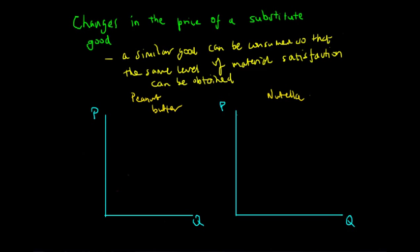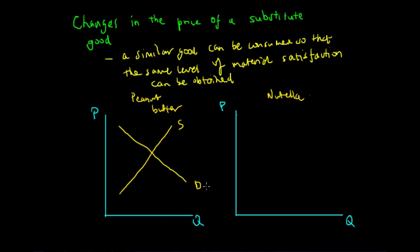Let's look at how this would actually affect supply and demand analysis. We have a supply and demand curve for peanut butter, assuming a relatively elastic, upward sloping supply curve because it has a lot of substitutes, and an elastic demand curve. Before any changes in price, the market has reached an equilibrium at P1 and Q1.